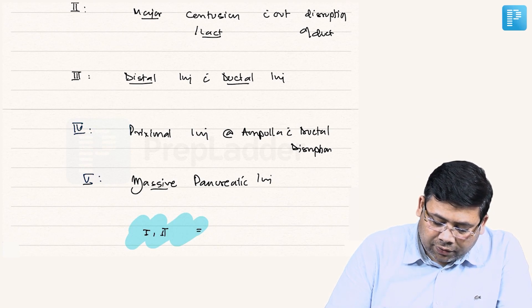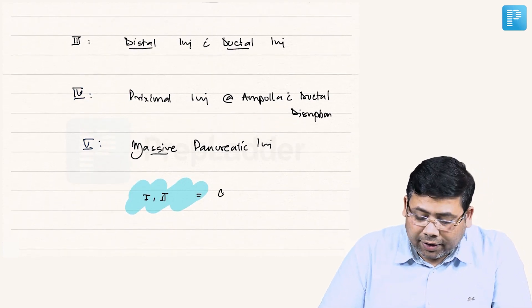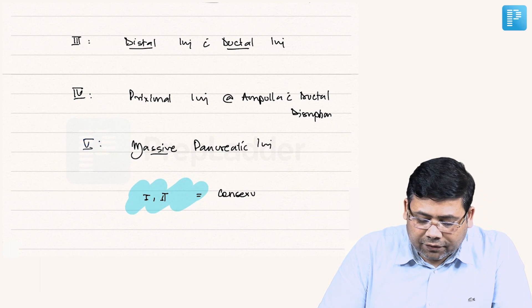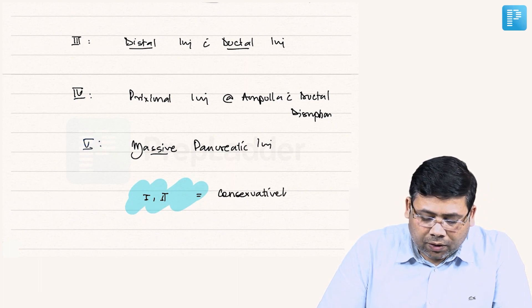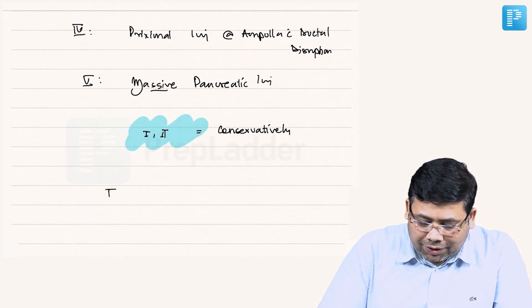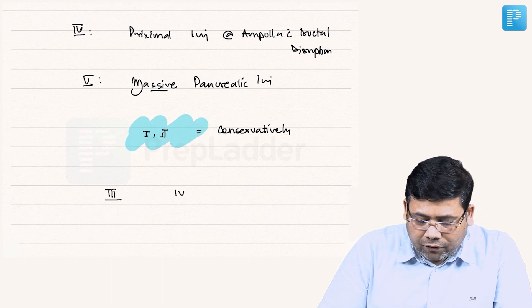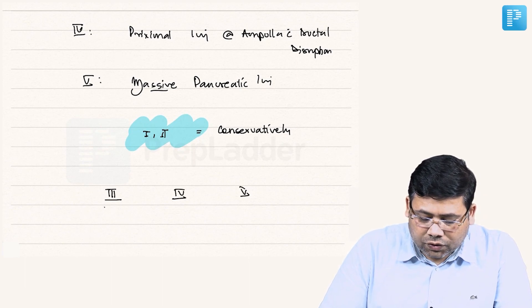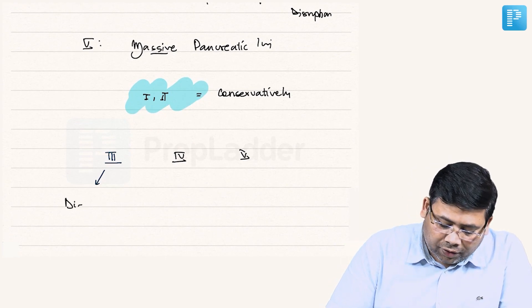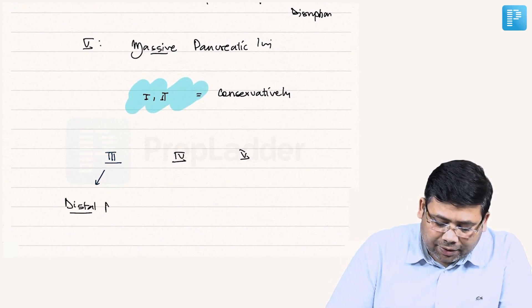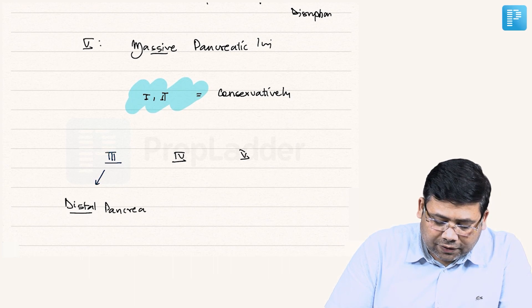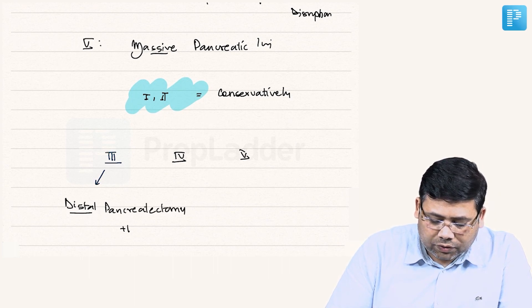If we talk about grade one and grade two, they are the ones where duct is not injured and hence they should be managed conservatively. Remember, if we talk about three, four, and five, in case of three we need to go for distal pancreatectomy.